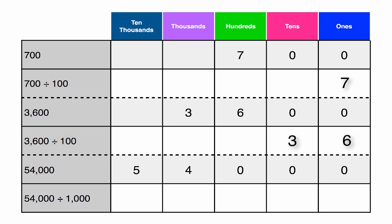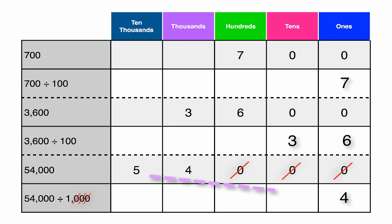Let's divide by our biggest number yet: 1,000. Let's solve 54,000 divided by 1,000. How many zeros does 1,000 have? 3. Go ahead and cross out the 3 zeros in 1,000 and the 3 zeros in 54,000. How many place values do we need to move over? 3. Move the 4 from the 1,000s to the 1s and the 5 from the 10,000s to the 10s, getting the answer of 54.